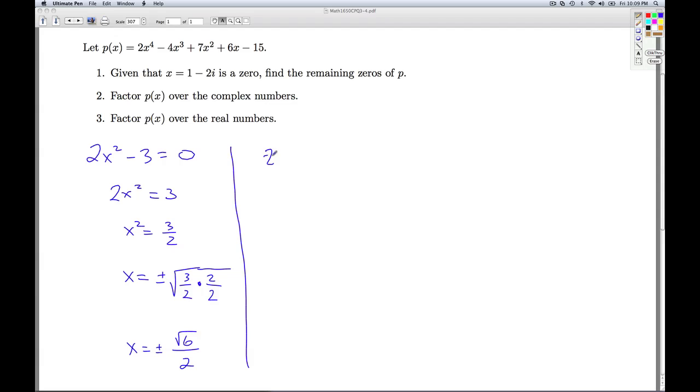So the zeros of P are x = 1 - 2i, that was given to us. 1 + 2i, we got that from the complex conjugates theorem. √6/2 and -√6/2.